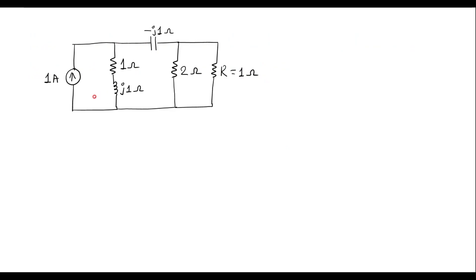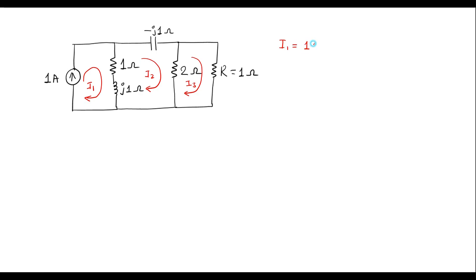Let me solve this using loop analysis. Here we can see that we have 3 loops. I will assume current through the first loop is I1, current through the second loop is I2, and current through the third loop is I3. We can observe that I1 is the current in the loop where 1 amp current is flowing, so I1 is equal to 1 amp.